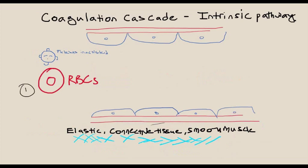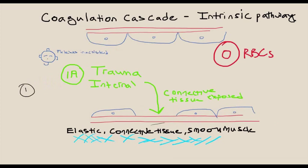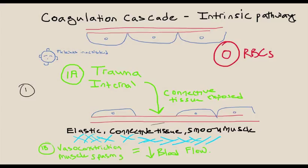When discussing the coagulation cascade, let's start with the intrinsic pathway. First, an insult is incurred, exposing the subendothelial tissue, most likely connective tissue. The surrounding endothelial cells release chemicals to cause vasoconstriction. This causes hemostasis and increases the chances of clotting factors bumping into each other and activating.